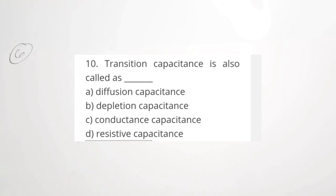Sixth question: transition capacitance is also called blank. Option A: diffusion capacitance. Option B: depletion capacitance. Option C: conductance capacitance. Option D: resistive capacitance. The transition capacitance actually occurs in the reverse bias condition. During reverse bias, the depletion region becomes pronounced and its width increases. Since it occurs in the reverse bias condition, it is also called depletion capacitance. The diffusion capacitance happens during the forward bias condition. The correct answer is option B, depletion capacitance.